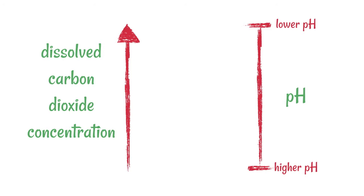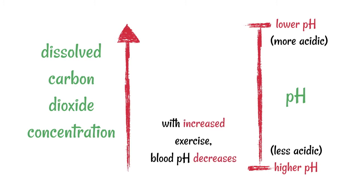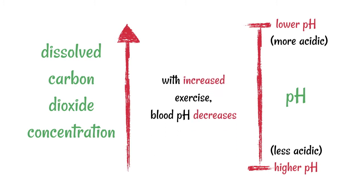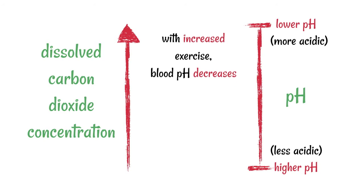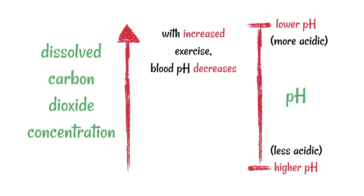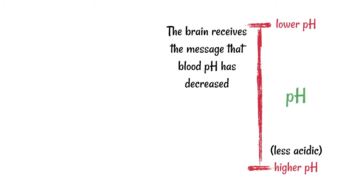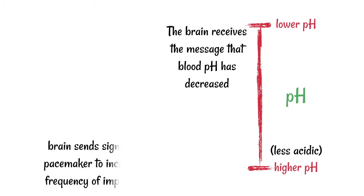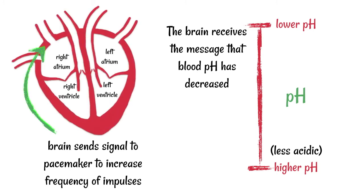Dissolved carbon dioxide concentration will increase as the amount of exercise increases, and with increased levels of exercise, blood pH will decrease, meaning it will become increasingly acidic. The brain then receives this message that the blood pH has decreased, and sends a signal to the pacemaker to increase the frequency of the impulses — meaning it'll make it beat faster.